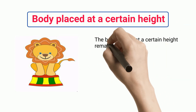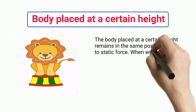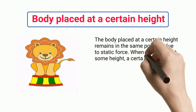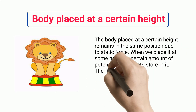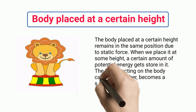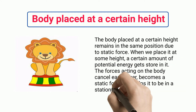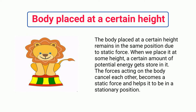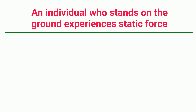A body placed at a certain height remains in the same position due to static force. When we place it at some height, a certain amount of potential energy gets stored in it. The forces acting on the body cancel each other, becoming a static force that helps it remain in a stationary position.